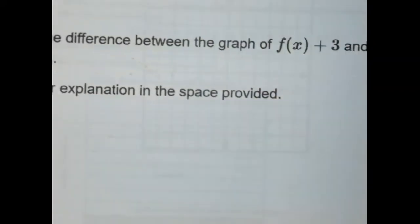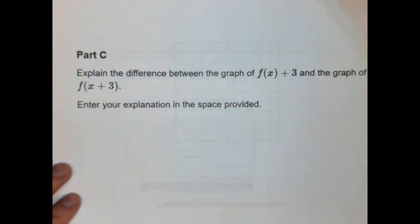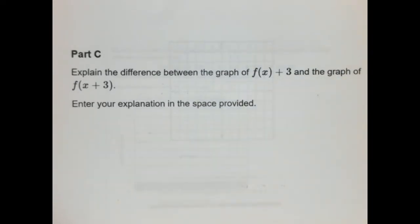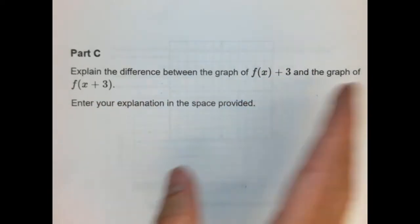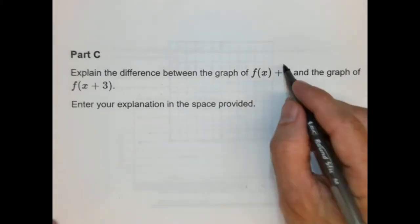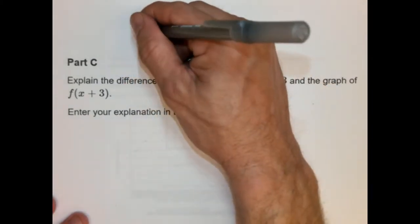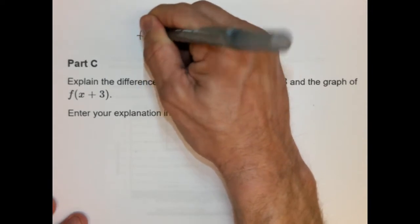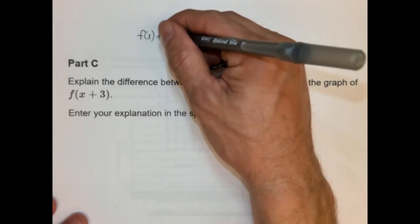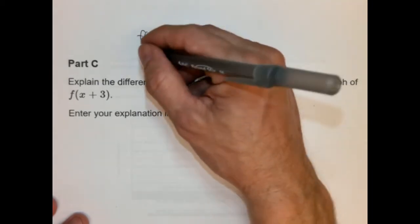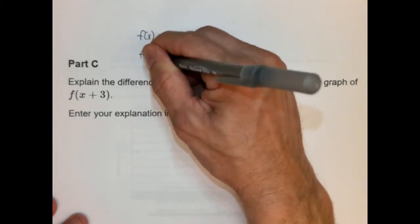Part C. Explain the difference between the graph of f(x) + 3 and then f(x+3). So here's the deal. When you have these two things are different. These are what we call transformations, or transforming the function. So I'm going to write a little note here. f(x) + n and then f(x) - n.